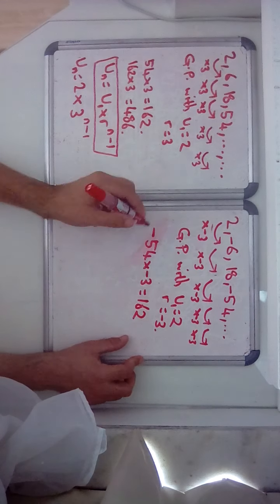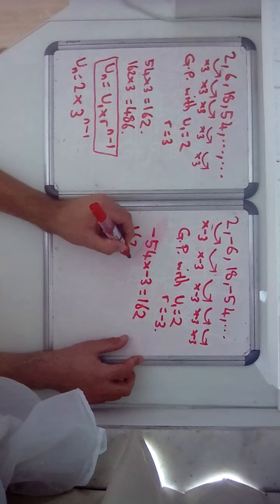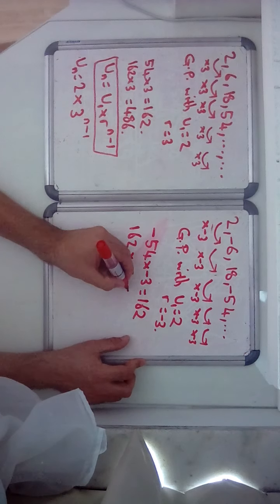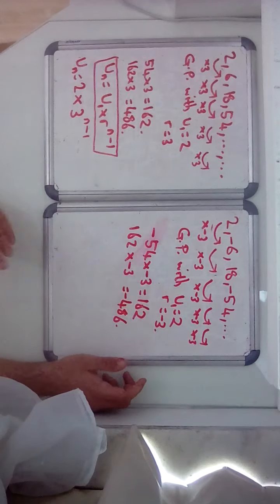So 162 times minus 3 is going to be 486 but negative. So they are the next two terms.